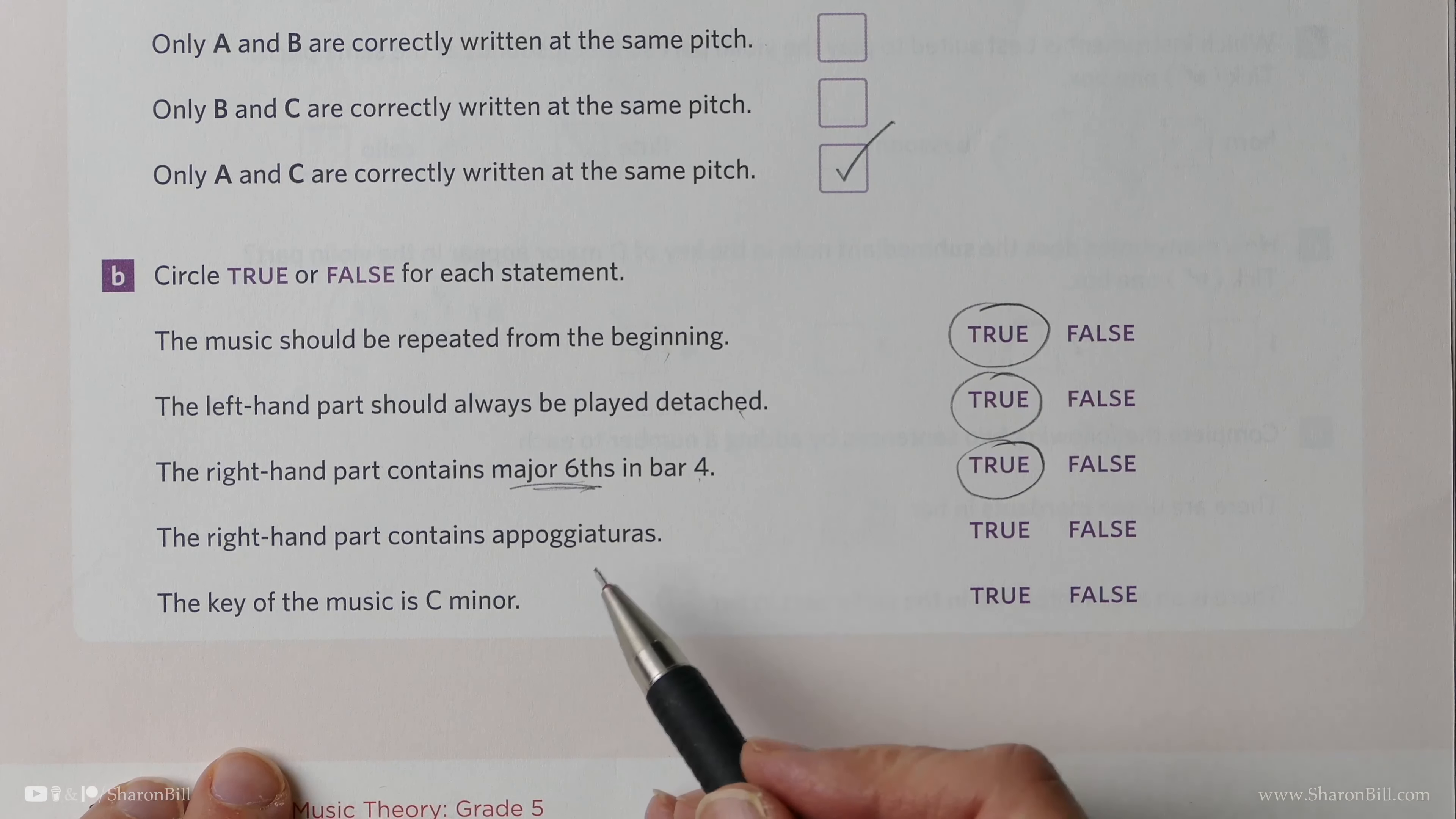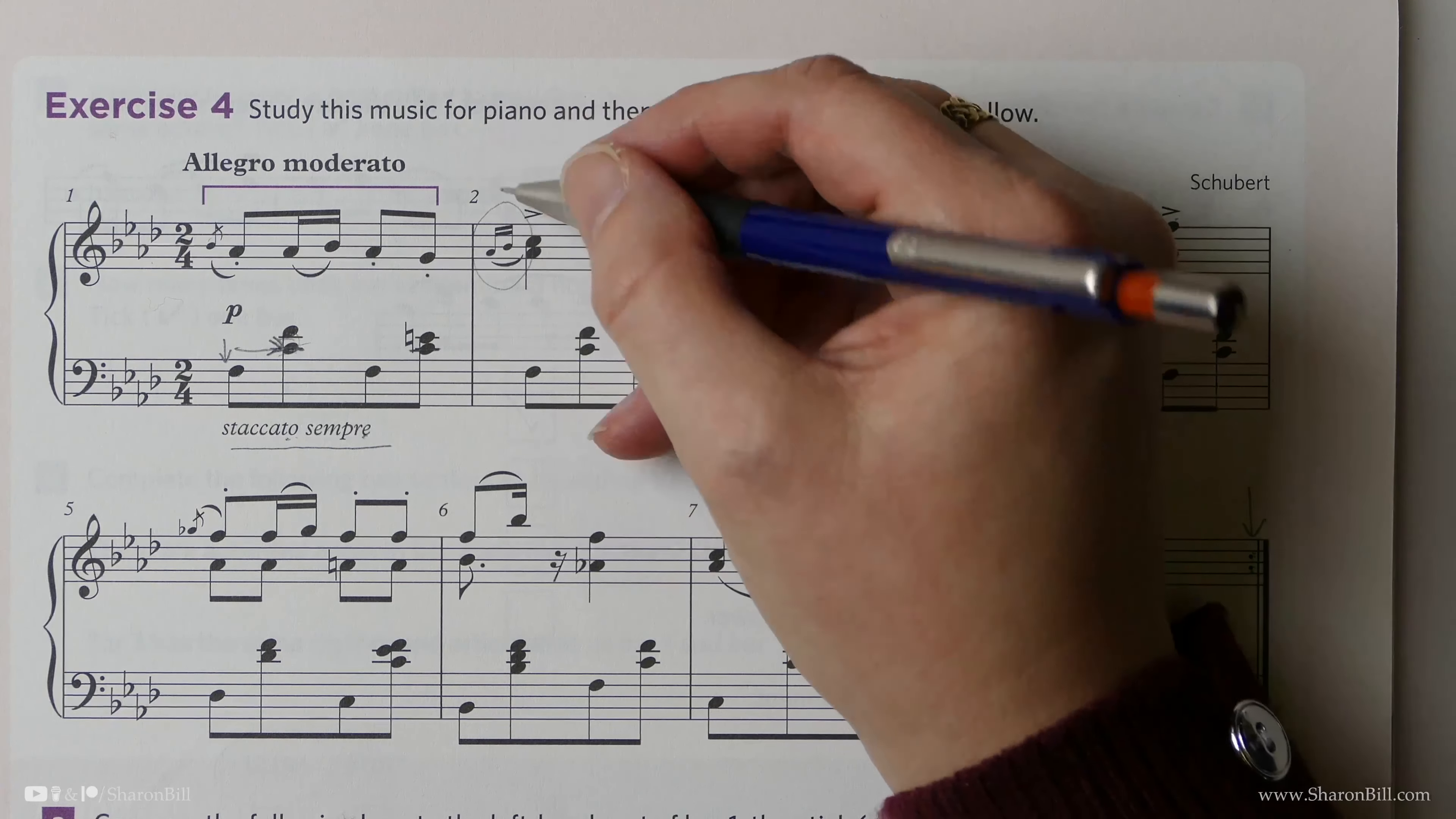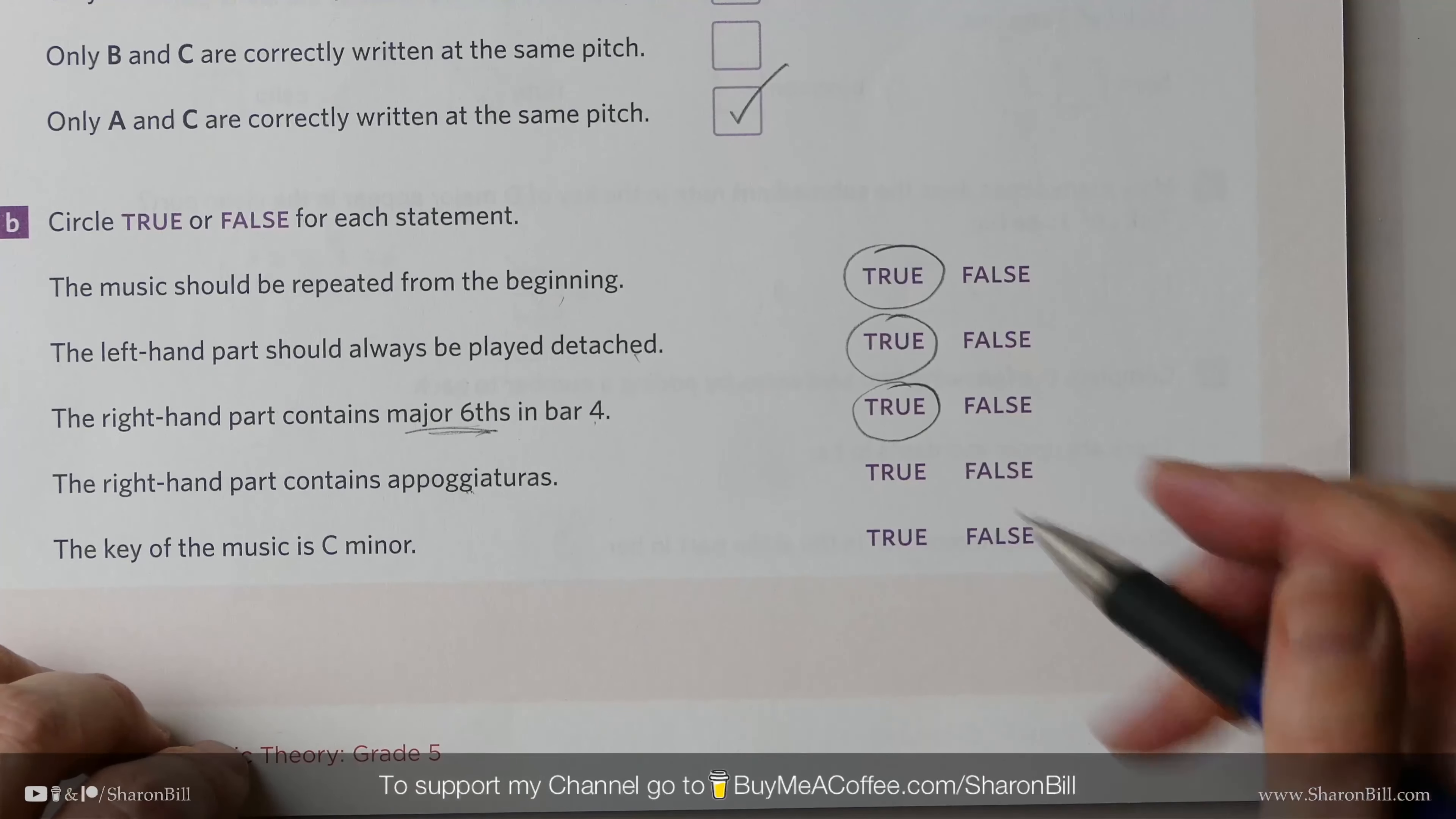Is it true that the right hand part contains appoggiaturas? We've already discussed that. Here we have acciaccaturas. Because there are more than two notes, they don't really class as an appoggiatura. An appoggiatura would be one note that we divide equally between two notes. That's not true—that's false. A bit sneaky there, that one.